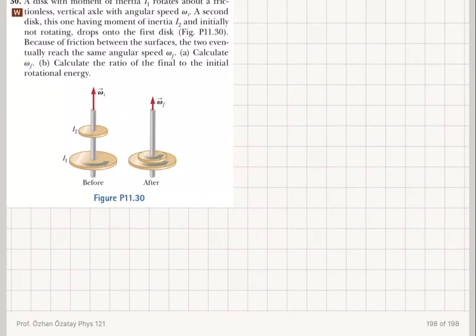Let's take a look at an example for angular momentum conservation. A disk with moment of inertia I1 rotates about a frictionless vertical axle with angular speed omega initial. A second disk, having moment of inertia I2 and initially not rotating, drops onto the first disk.